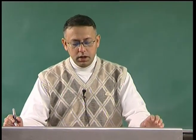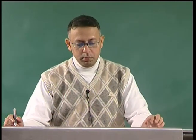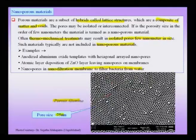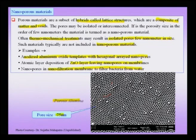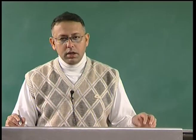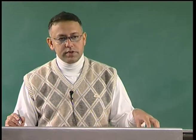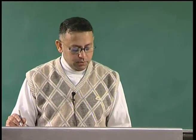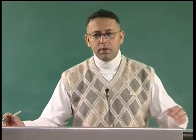Most structures like zinc oxide layers with nano pores on membranes, or anodized aluminum oxide templates with hexagonally arrayed nano pores, are definitely nano porous materials. There could be some pores in the nano scale and some larger, and therefore such a material can be thought of as a hierarchical arrangement of pores.